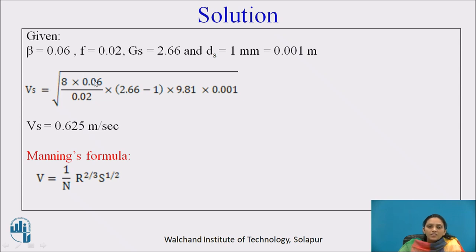We have derived the self-cleansing velocity equation. Put the given values beta, F, and Gs to find Vs. Beta is 0.06, F is 0.02, Gs is 2.66, and diameter of solid particle is 1 mm, so put in meters 0.001 meter. Put everything in the formula and calculate Vs: it is 0.625 meter per second.